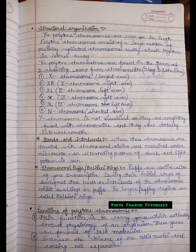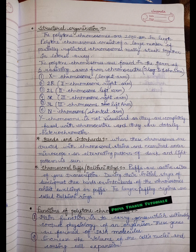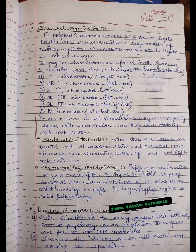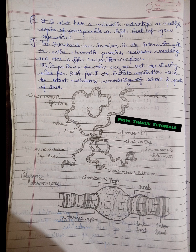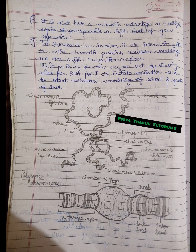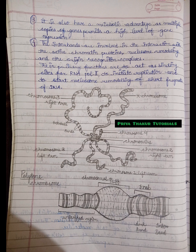The functions of polytene chromosomes are: first, to carry genes which ultimately control the physiology of an organism, and these genes are formed of DNA molecules; second, to increase the volume of the cell's nuclei and cause cell expansion; third, they have a metabolic advantage as multiple copies of genes permit a high level of gene expression; fourth, the interbands are involved in interaction between active chromatin proteins, nucleosome remodeling, and origin recognition complexes, acting as binding sites for RNA polymerase II, initiating replication, and starting nucleosome remodeling of short DNA fragments.